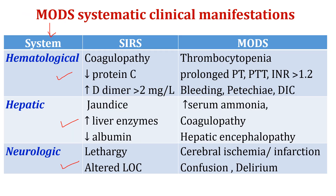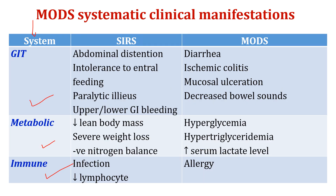This slide also covers the rest of the body systems: hematological system, hepatic system, neurologic system, gastrointestinal tract system, metabolic system, and finally the immune system.